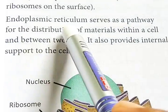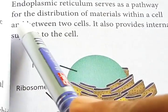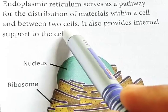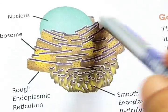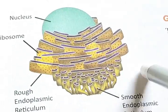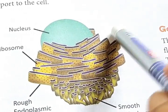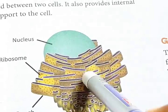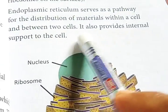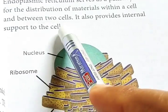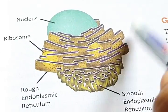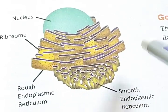Endoplasmic reticulum serves as a pathway for distribution of material within a cell and between two cells. So the main function of endoplasmic reticulum is that it acts as a pathway, helps to interconnect cells and provide internal material, and also provides internal support to the cell and in the bonding of two cells.